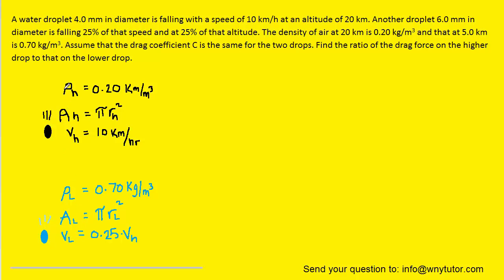And what we've done is we've labeled the density of air, the area of the drop, and then the speed of the drop. Notice that for the area of both drops we've used the area of a circle, pi r squared, and that's because the drops are assumed to be spherical.